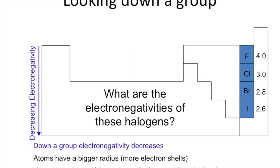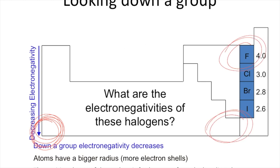Going down the periodic table, you have decreasing electronegativity, for the same reason as atomic radius and ionization energy. As you move down, you get more shells of electrons, and the more electrons you get, the less attraction there is between the nucleus and the outer shell because they're so far apart. So the least electronegative element on the table is at the very bottom — it has a whole bunch of rings of electrons and therefore does not pull any shared pairs very close to itself, compared to fluorine or elements further to the right.